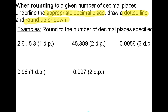In the first question, I want to round to one decimal place, or 1DP as we abbreviate it. The first decimal place is 5, so I underline the 5 and draw a dotted line after the 5. The number just to the right of the dotted line is 3, and if we have 5 or more we round up, otherwise we round down. So our answer is simply 26.5, because the 3 tells us to round down.